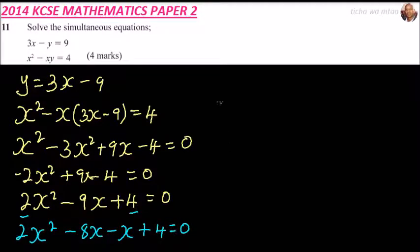We rewrite our equation as 2x squared minus 8x minus x plus 4 equals 0. Factor out 2x, we get x minus 4.